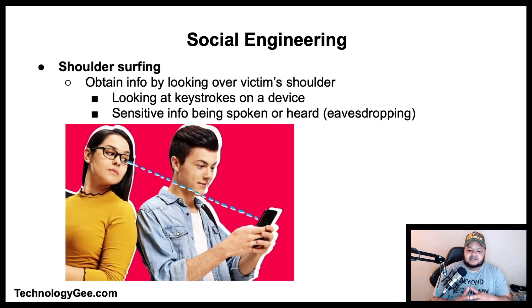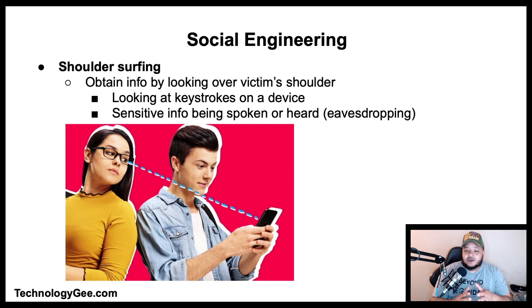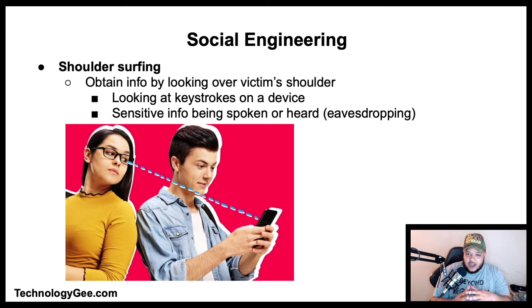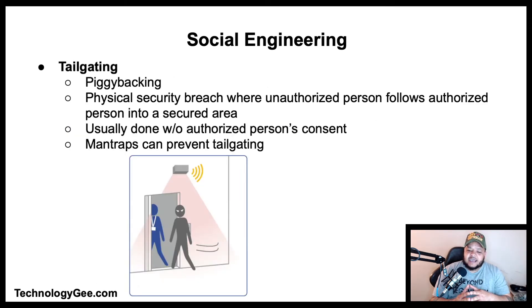Next we have shoulder surfing. This is a social engineering technique used to obtain information such as personal identification numbers, passwords, and other confidential data by looking over the victim's shoulder — either from keystrokes on a device or from sensitive information being spoken and heard, also known as eavesdropping.